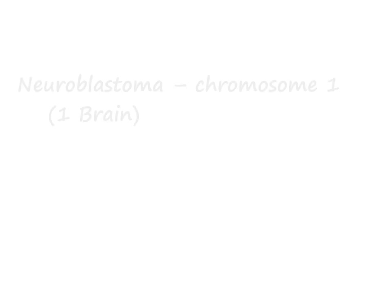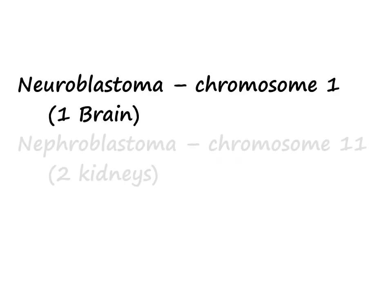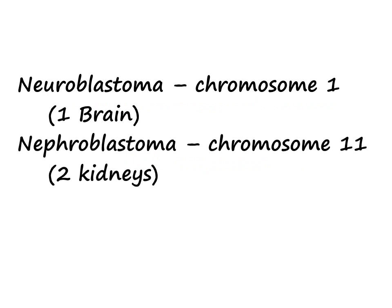Hello everyone, today I'm going to teach you chromosomal disorders mnemonics. I'll be teaching in pairs of chromosomes — two diseases with chromosome abnormalities. The first group is neuroblastoma and nephroblastoma. Neuroblastoma is chromosome 1.